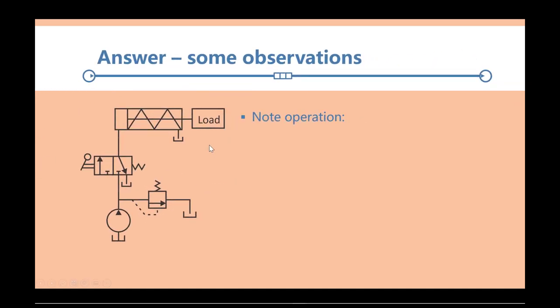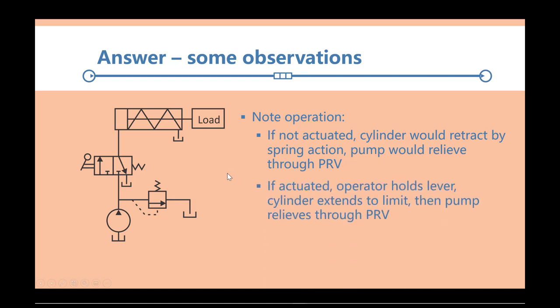Okay, now a few other things to observe here. I've said this already, if we don't actuate the valve, the cap end is connected to the tank, and the spring will retract the cylinder, it'll push on the piston, and make the cylinder retract. At that point, we're blocked here, and we're relieving through the pressure relief valve. If you actuate, then the cylinder extends to its limit, and the pump relieves through the pressure relief valve.